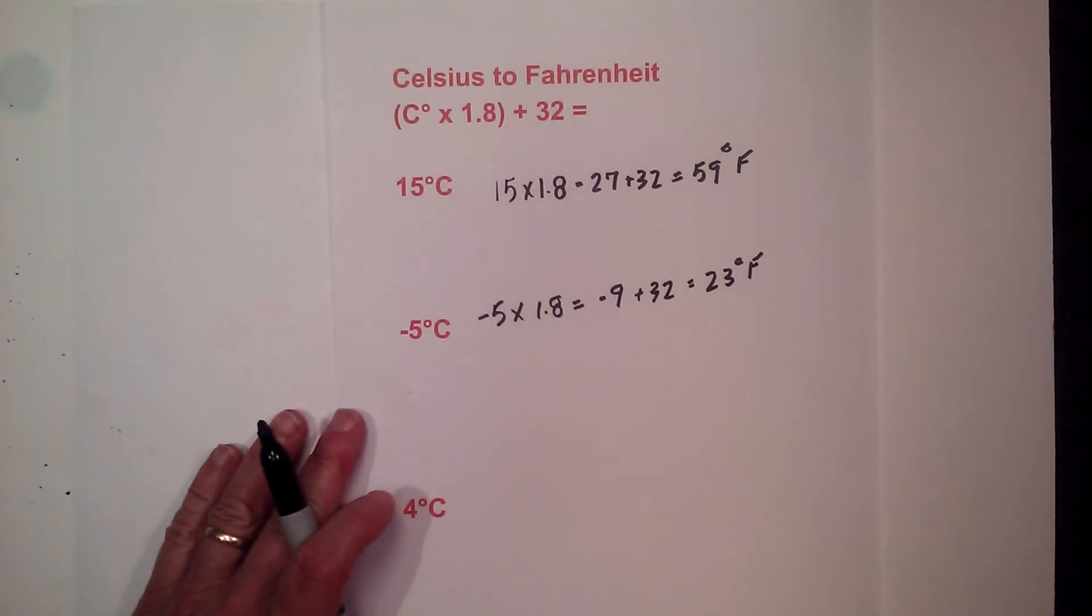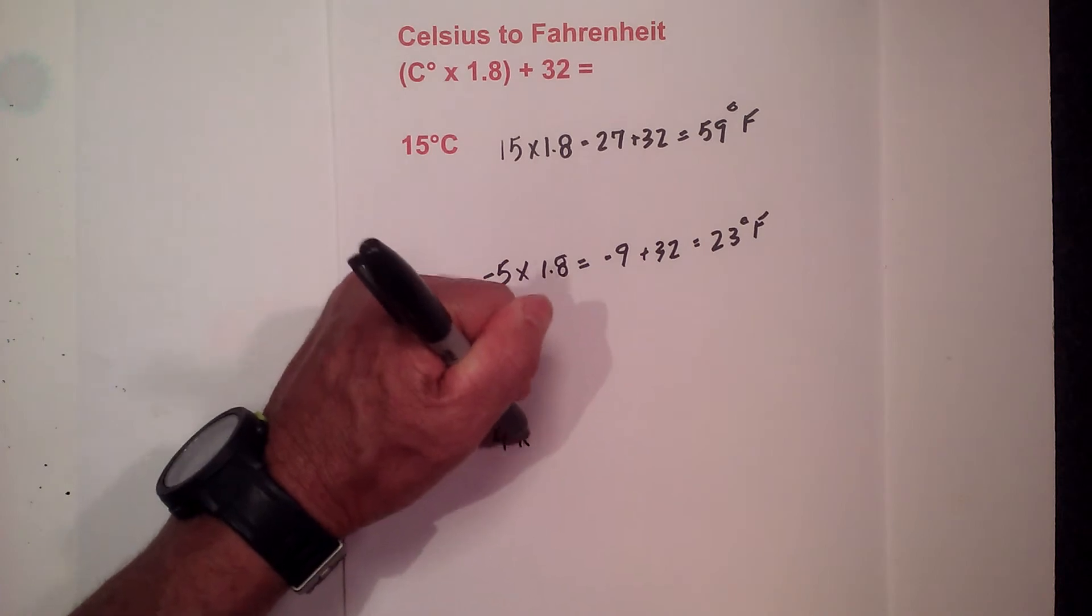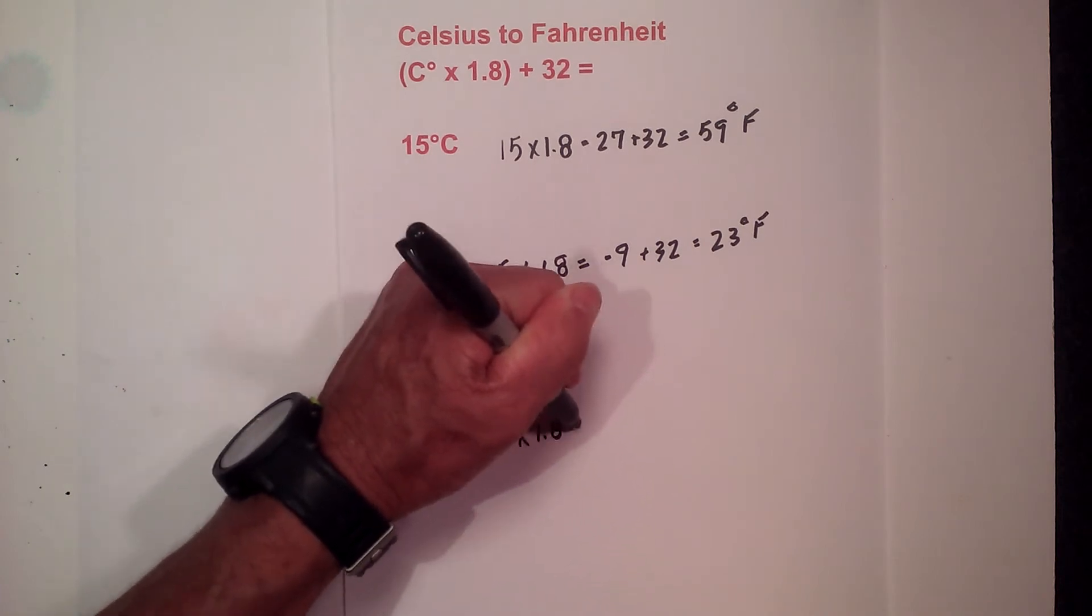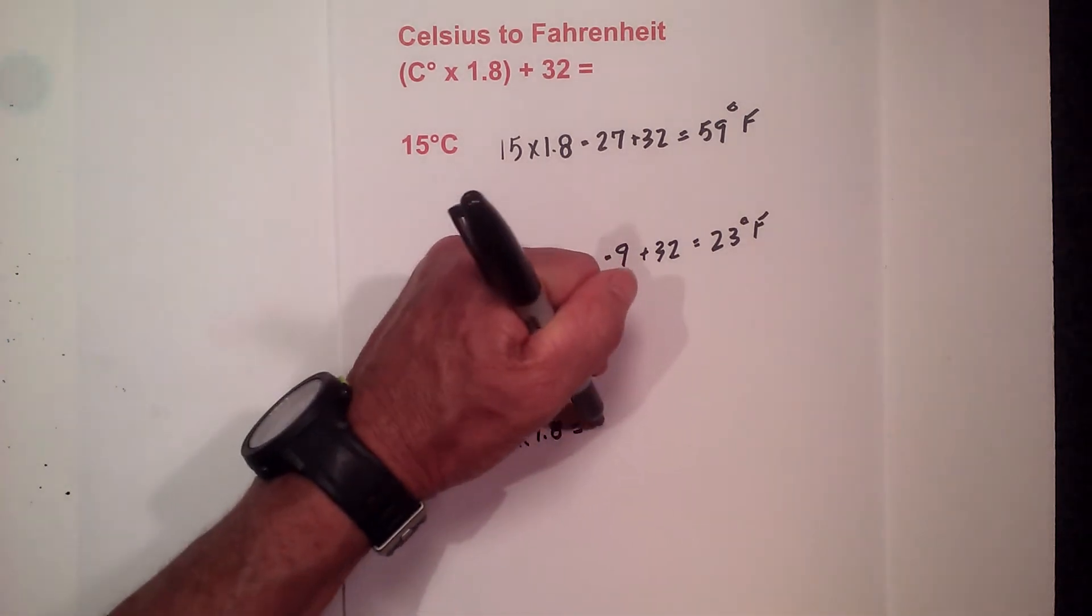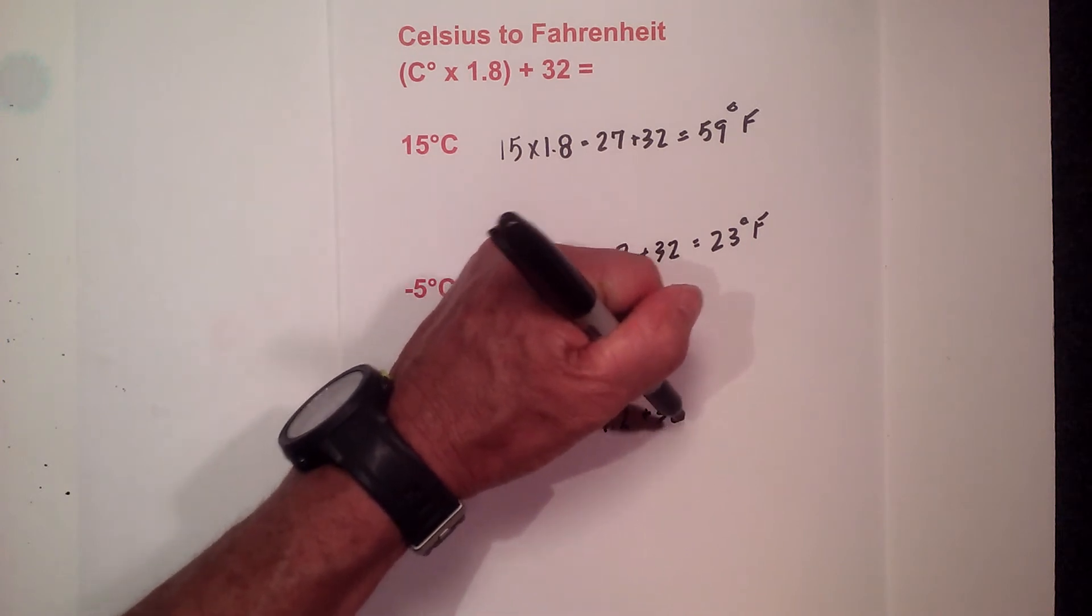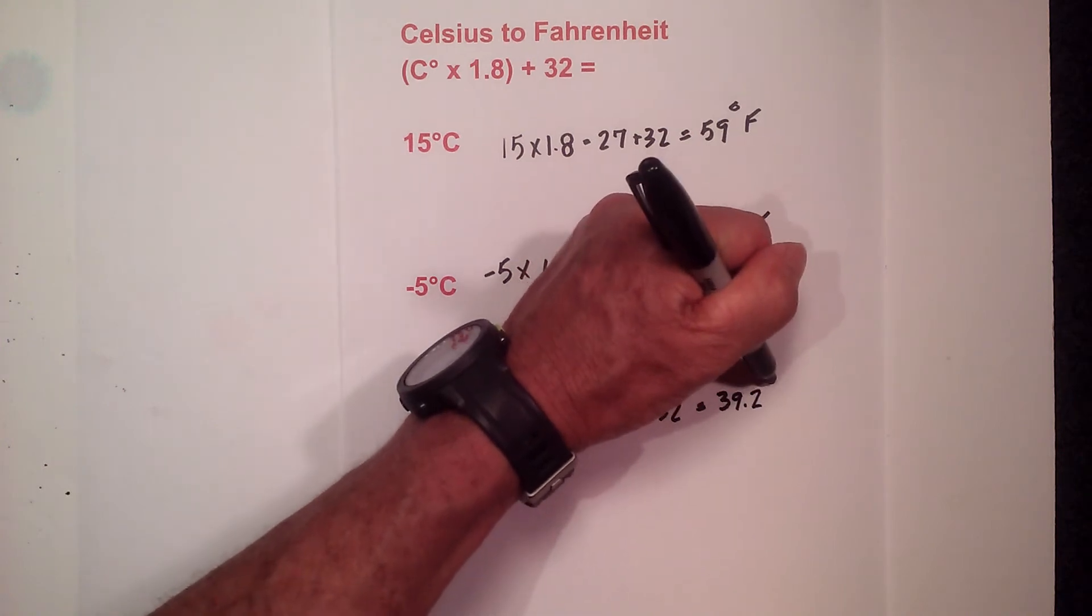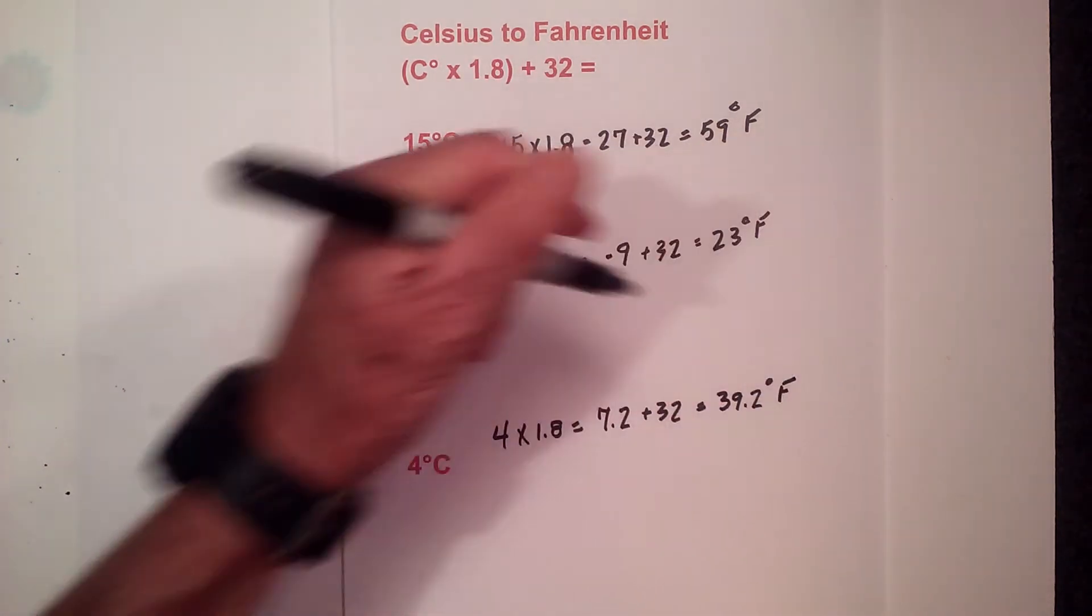And finally let's go with 4. 4 times 1.8 equals 7.2, add 32 and that equals 39.2 degrees Fahrenheit.